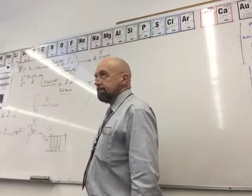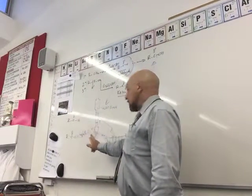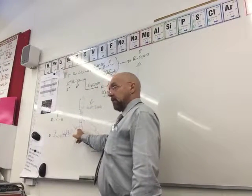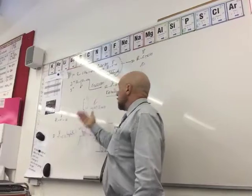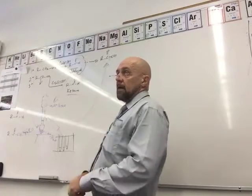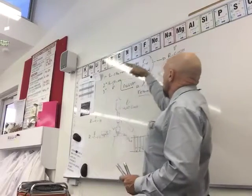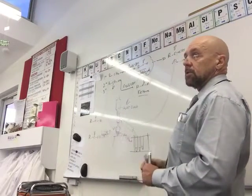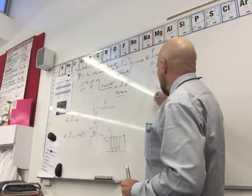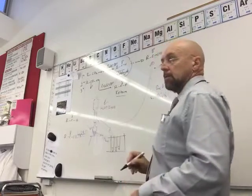If the aldehyde stays in the flask with the dichromate, it just keeps reacting and goes through to the carboxylic acid. So if I want to go from a primary alcohol to a carboxylic acid, I first do a reflux, then distill off the carboxylic acid.